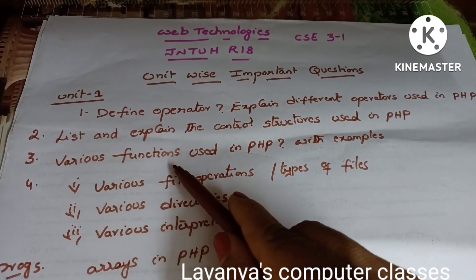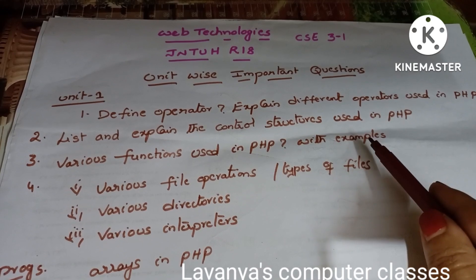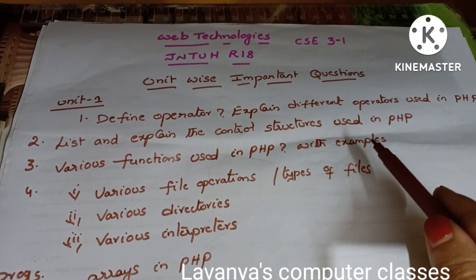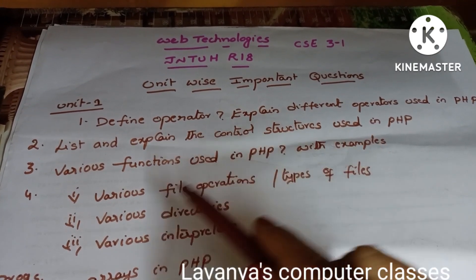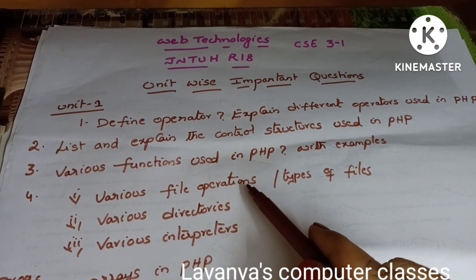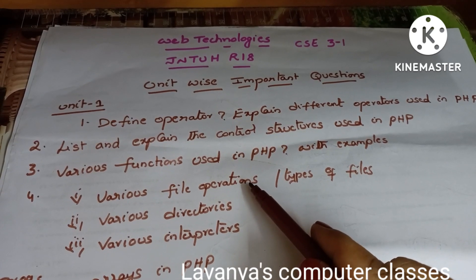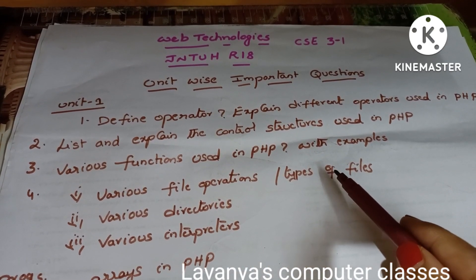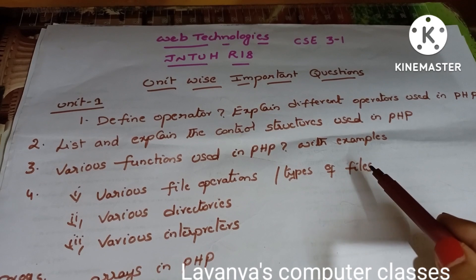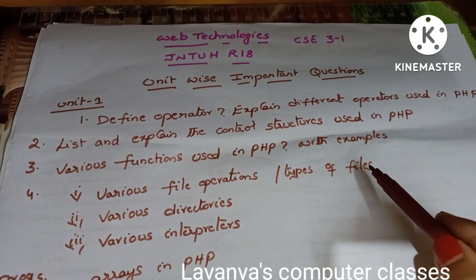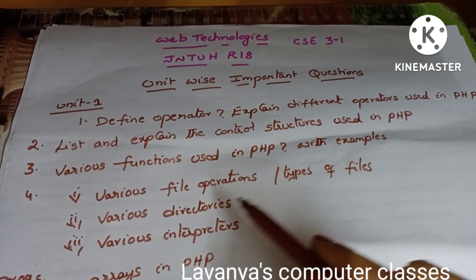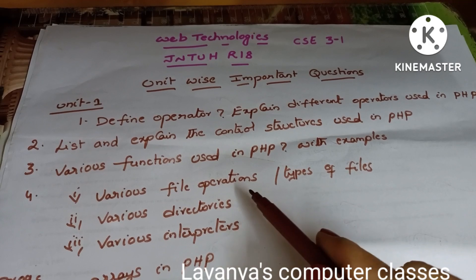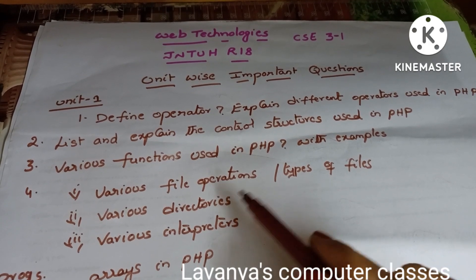Second question is list and explain the control structures used in PHP - very important question. Next, explain various functions used in PHP with examples, including programs. Next, explain various file operations and also explain the different types of files - binary files, text files, and binary file operations, file open, file close, everything.